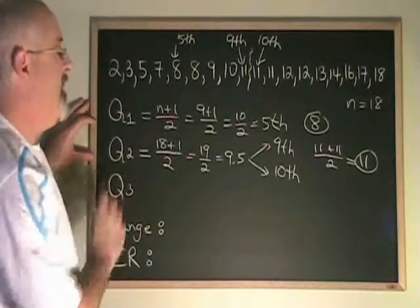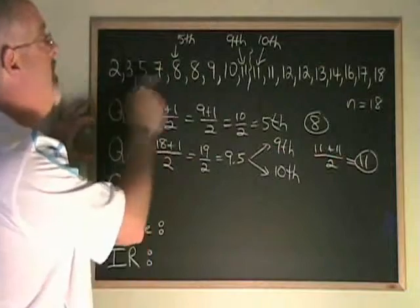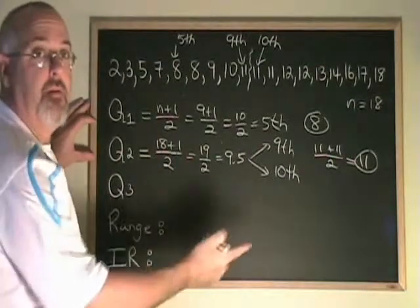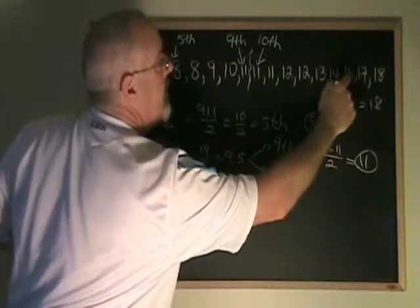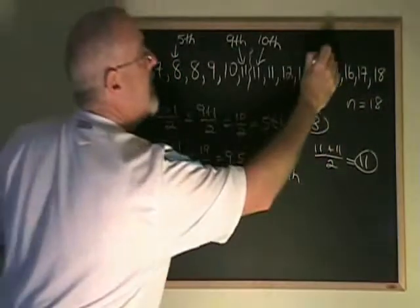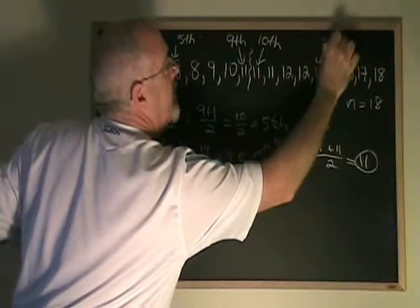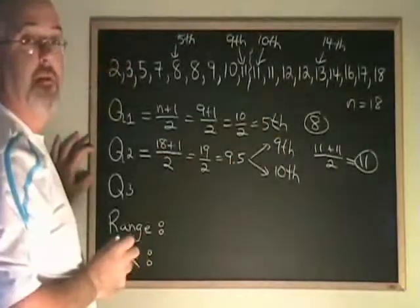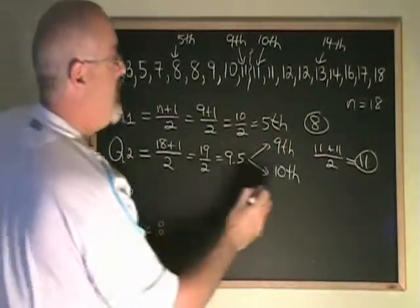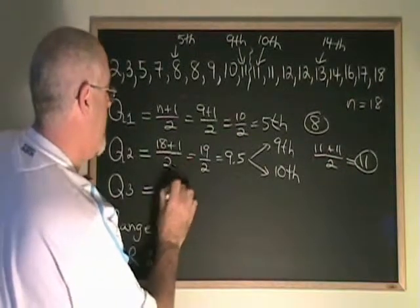Now, to find Q3, we have a shortcut. We know it's the 5th data value from the left side. It's going to be the 5th data value from the right side as well to get our Q3. Counting from the right, the 5th data value is 13. It's actually the 14th data value counted from the left side, but it's the 5th counting from the right side. That value is going to be our Q3. So we know our Q3 is 13.